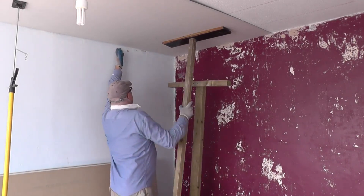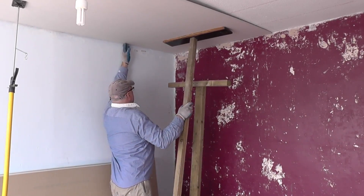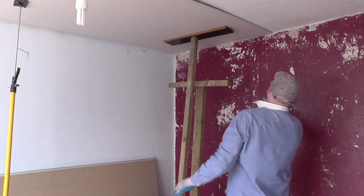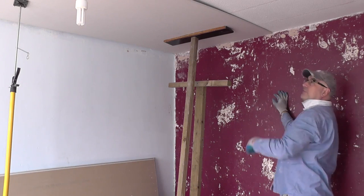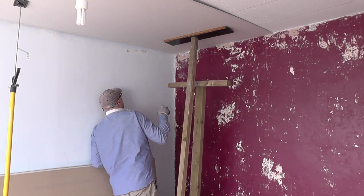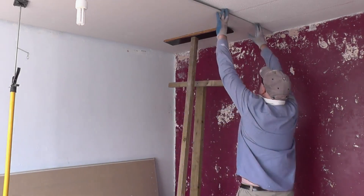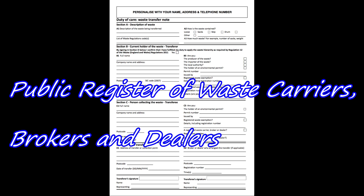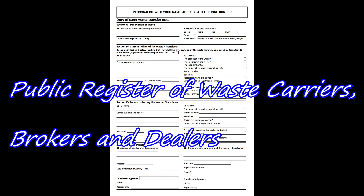To keep within the law, you must ensure the contractor you employ has a current upper-tier registration and a valid permit. Their registration number should start with the letters C, B, D, U followed by a series of numbers. In England, you can check whether a company is registered on the Environment Agency's public register of waste carriers, brokers and dealers, which is also useful for finding a registered carrier in your area.